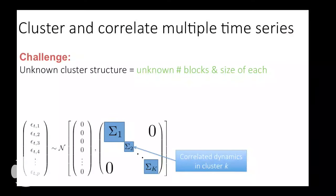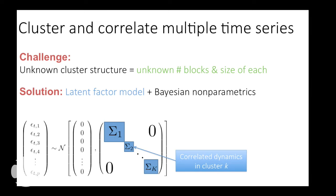The challenge is that we don't know what the clustering structure is — that's what we're trying to discover from data. We don't know how many blocks there are in this block diagonal matrix, the size of each block, or the ordering of the census tracts. To solve this, we use a latent factor model combined with Bayesian nonparametrics.